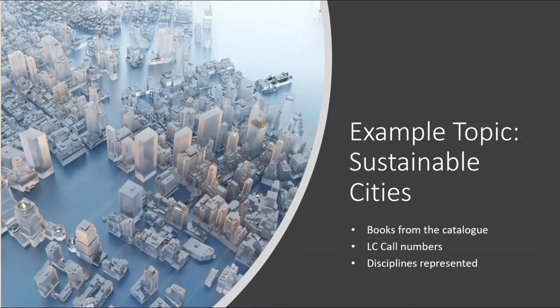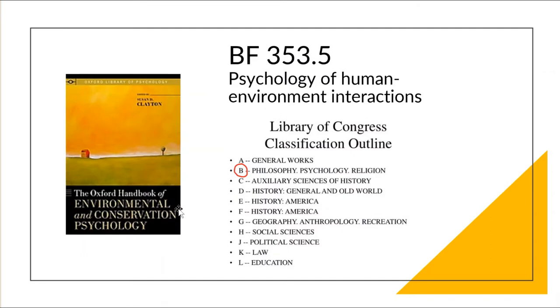To demonstrate, let us look at the topic of sustainable cities. We're going to look at books from the library catalog, identify their Library of Congress call numbers, and the disciplines represented by those call numbers. Near the beginning, with the BFs in psychology, is where we find books about the psychology of human-environment interactions — so how do we encourage more sustainable behavior, to recycle, to compost, to ride your bicycle to work? These are psychological issues.